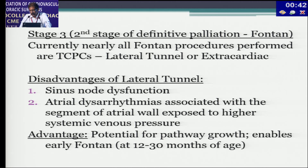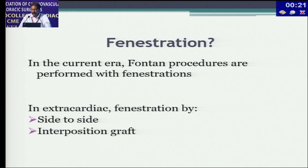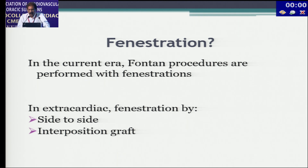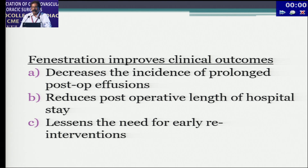If you need to relieve volume overload earlier or the patient becomes symptomatic or develops collaterals, a lateral tunnel can be done at around two to two-and-a-half years. Regarding fenestration — the only aspect that has undergone a prospective randomized trial — the one existing trial confirms it is beneficial. In extracardiac Fontan, fenestration can be achieved by a side-to-side anastomosis or interposition grafting. Fenestration improves clinical outcomes: it decreases prolonged postoperative effusions, reduces postoperative hospital stay length, and lessens the need for early re-interventions.